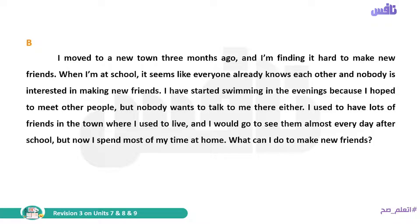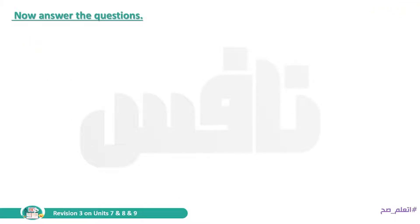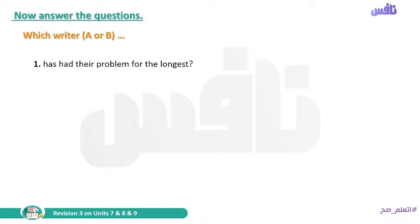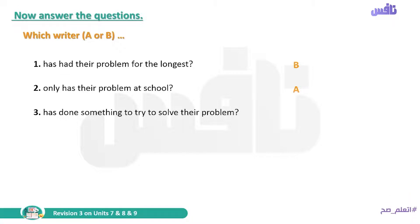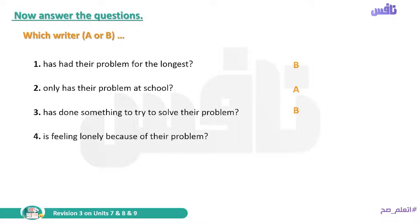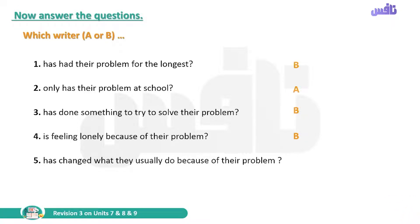Now let's answer the questions about these two problems. We will read each sentence and say which writer, A or B, it refers to. Number one: has had their problem for the longest — writer B. Number two: only has their problem at school — writer A. Number three: has done something to try to solve their problem — writer B. Number four: is feeling lonely because of their problem — writer B. Number five: has changed what they usually do because of their problem — writer A.